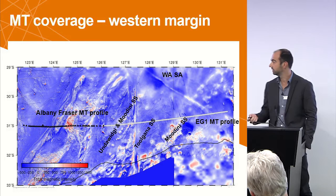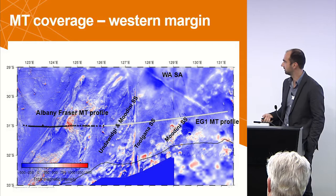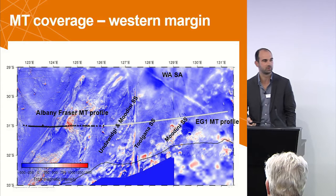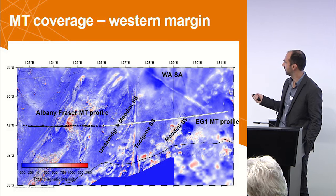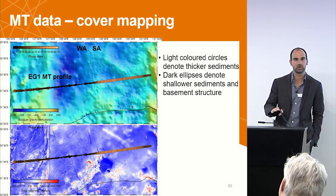The profile I'm going to talk about today is over 850 kilometers long, and together with the EG1 East profile presented last year, it's on the order of about 1,300 kilometers — which I think makes it the longest MT profile in the world today, which is quite exciting. This is profile EG1, recently collected, and it nicely joins up with an Albany-Fraser profile to give us more regional context.